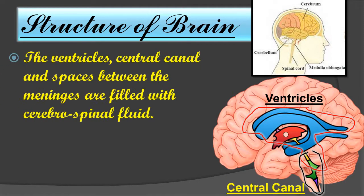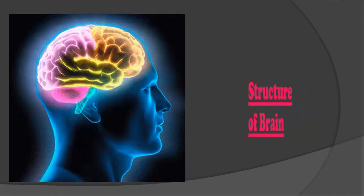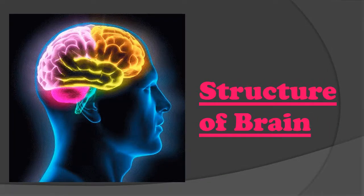The ventricles, central canal, and spaces between the meninges are filled with a fluid called cerebrospinal fluid. This cerebrospinal fluid supplies nutrients to the central nervous system and protects it from shock.